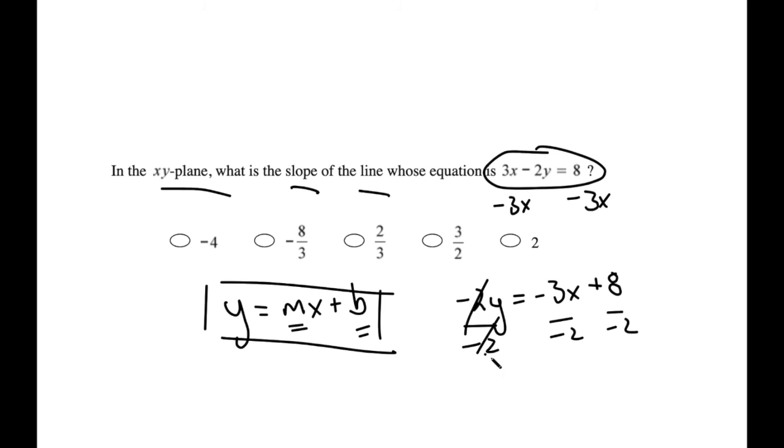I have y equals negative 3 over negative 2, is positive 3 over 2 times x minus 4. Again, the 4 isn't really important. What matters is that the slope is 3 over 2. So the answer here is d.